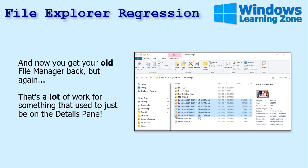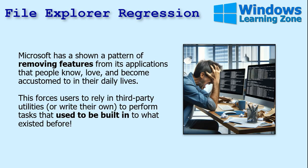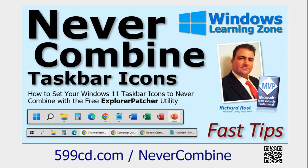Microsoft has shown a pattern of removing features from its applications — from Office, from Windows — that people know, love, and become accustomed to in their daily lives. This forces users to rely on third-party utilities or write their own. For example, Windows 11 removed the ability to see separate taskbar icons for different windows. If you had multiple windows open with your browser or Word, you could see them separately before — then Windows 11 forced them all to be grouped together with no way to turn that off. Fortunately, someone wrote an app to revert back to the original ungrouped style.